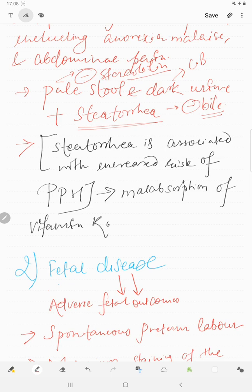Steatorrhea is associated with increased risk of postpartum hemorrhage because there will be malabsorption of vitamin K also. Why will there be malabsorption of vitamin K? It is again due to deficiency of bile, because bile is important for absorption of fat and fat-soluble vitamins, and vitamin K is a fat-soluble vitamin.